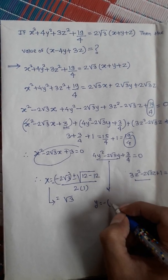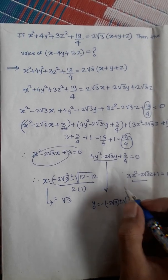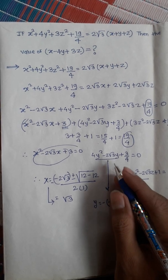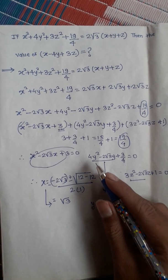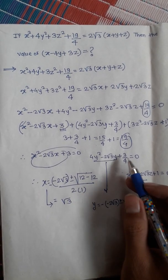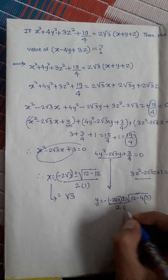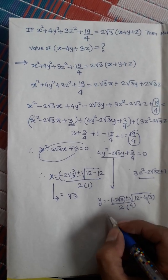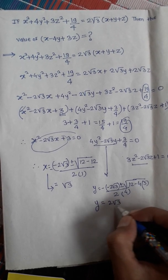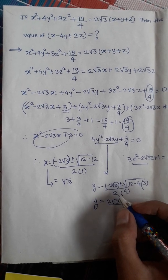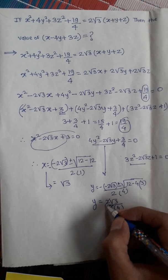For y: discriminant = (2√3)² - 4·4·(3/4) = 12 - 12 = 0, so y = 2√3 / (2·4) = √3/4.